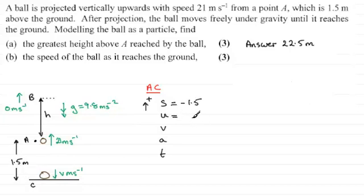U is the initial velocity which was upwards in the positive sense and that would be 21 metres per second. V we're trying to find, so I'll put a question mark there.